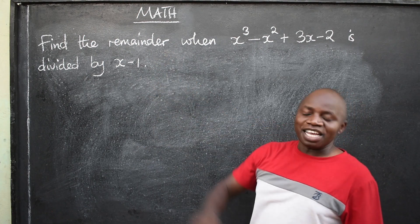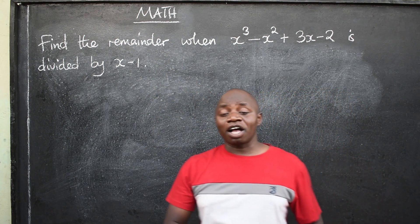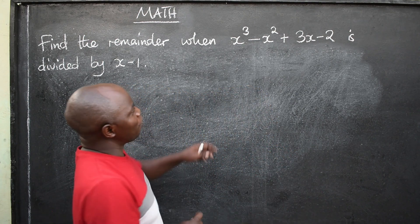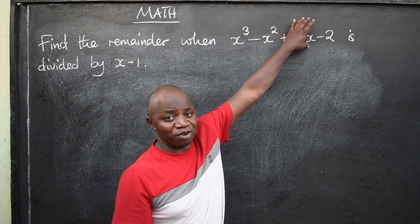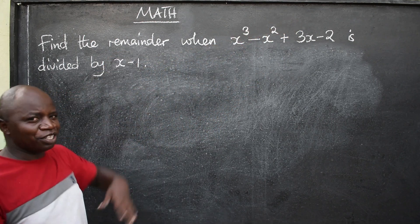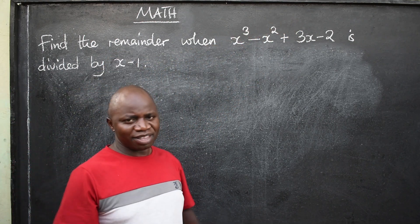The question is from what we call a factor and remainder theorem. We want to know, we have a polynomial here. When we divide this polynomial by this, what will be the remainder? That's the question.